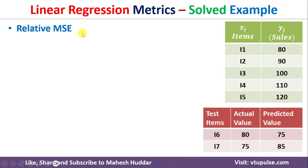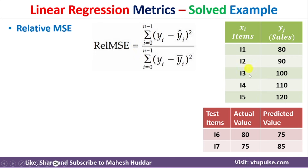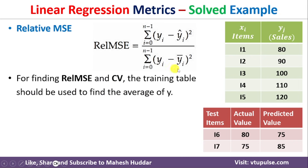The fourth metric is Relative Mean Squared Error, which is calculated with respect to the training examples. The formula is: RMSE_rel = Σ(yi − ŷi)² / Σ(yi − ȳ)², where yi is the actual output, ŷi is the predicted output, and ȳ is the mean of the training examples. We need to calculate the mean of the training examples and substitute it into the denominator.